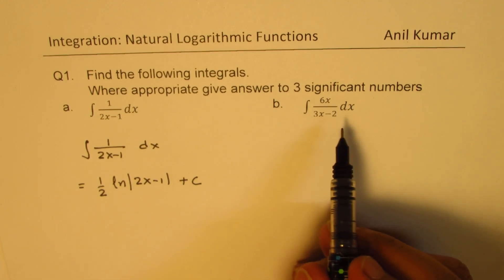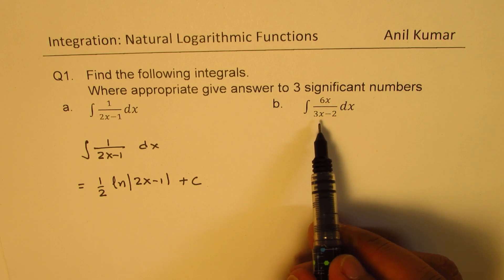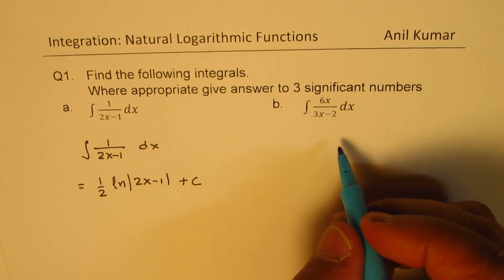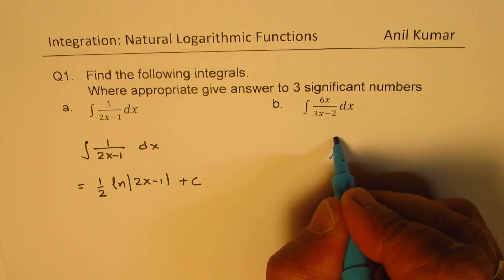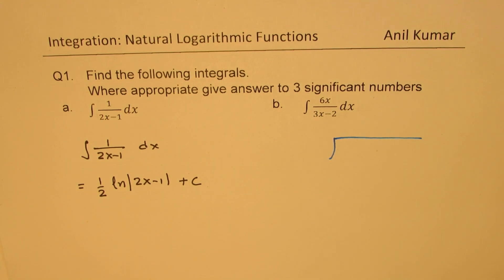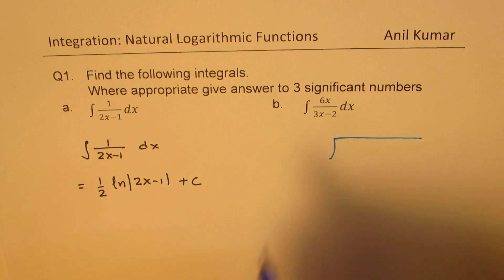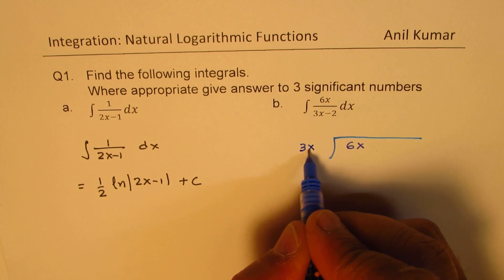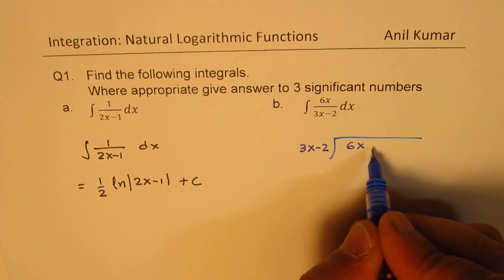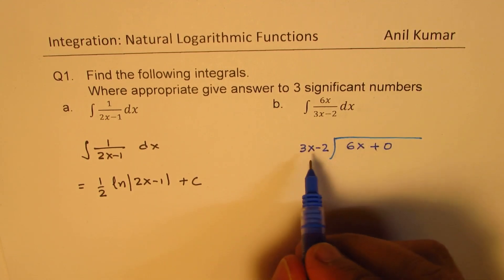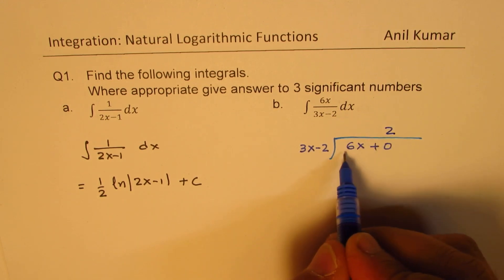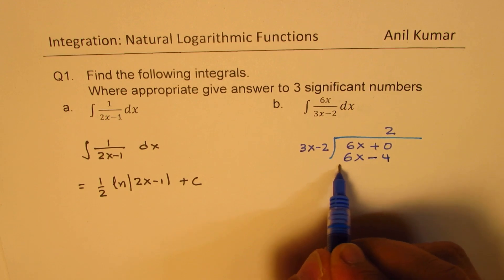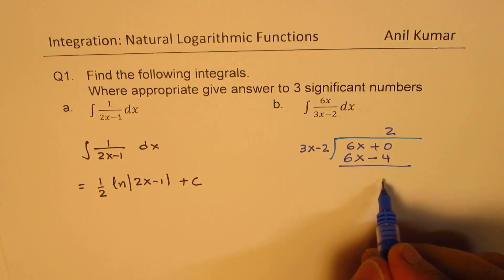Part B is 6x over (3x minus 2). In this case, you need to divide the numerator 6x by the denominator (3x minus 2). Dividing: 6x divided by (3x minus 2) — multiply (3x minus 2) by 2 to get 6x minus 4. Taking away from 6x plus 0, you get remainder 4.